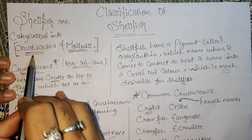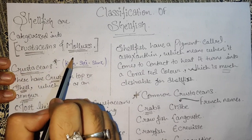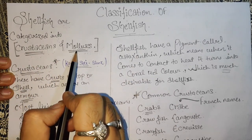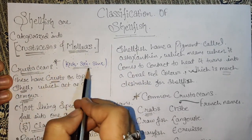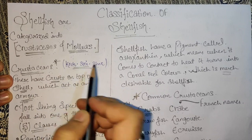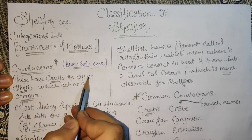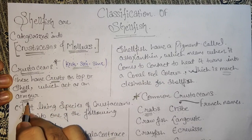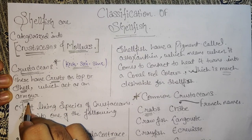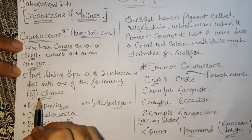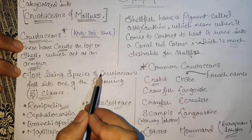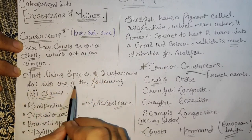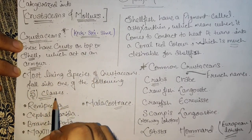Shellfish are categorized into two types. First, we have crustaceans and molluscs. What are crustaceans? These have a crust on top — shells which act as armor. Most living species of crustaceans fall into one of the following five classes.